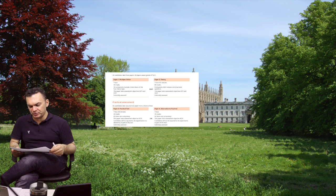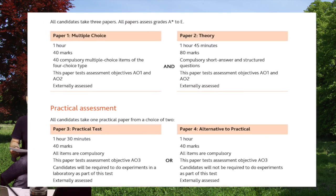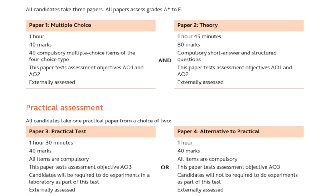Now for O Level: paper one is multiple choice, exactly like paper two in IGCSE Extended or paper one in Core, but the time allowed is a little longer — about 15 minutes extra — so it's one hour for 40 marks. Paper two is one hour 45 minutes (105 minutes) for 80 marks, because the questions in O Level will be a little deeper and depend on language, as it is generally for native English speakers carried out inside the UK.